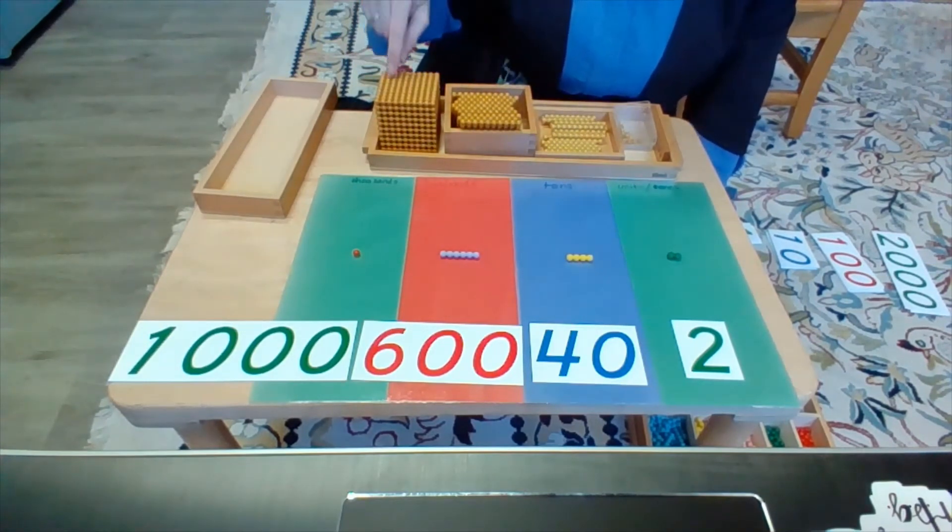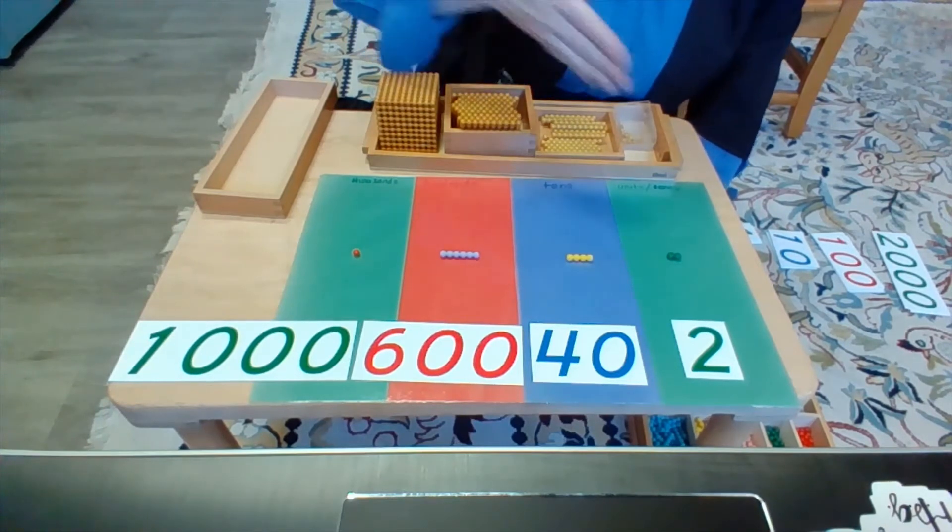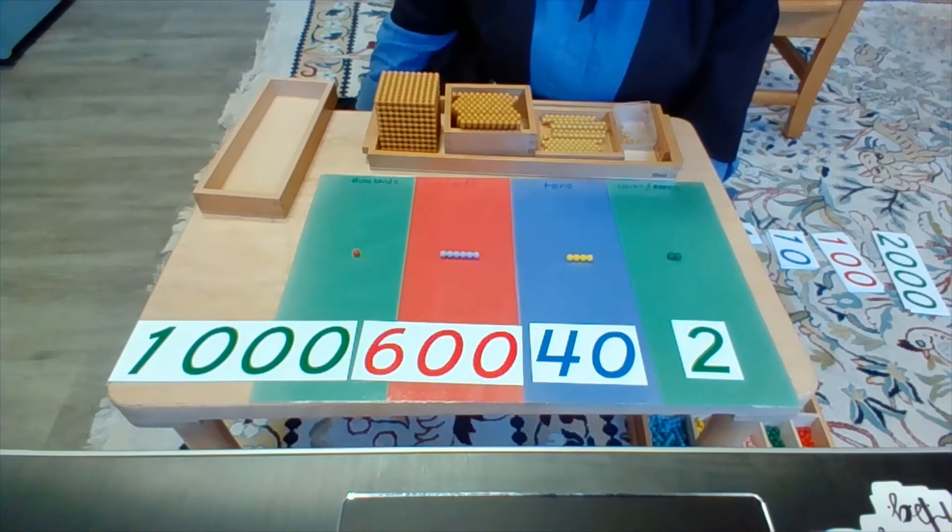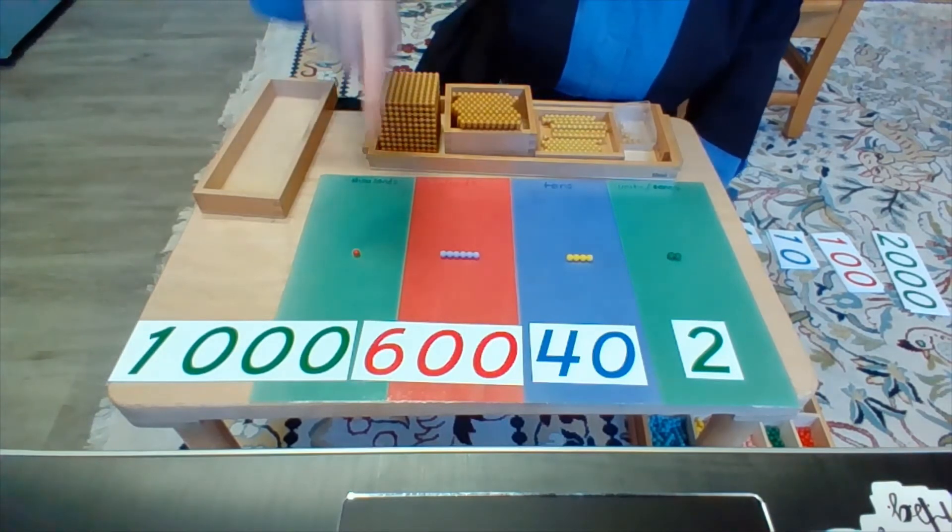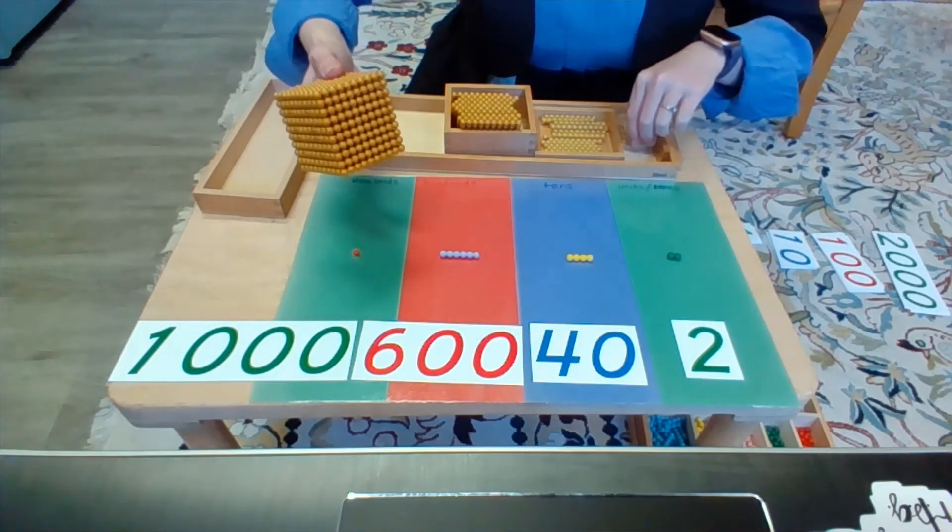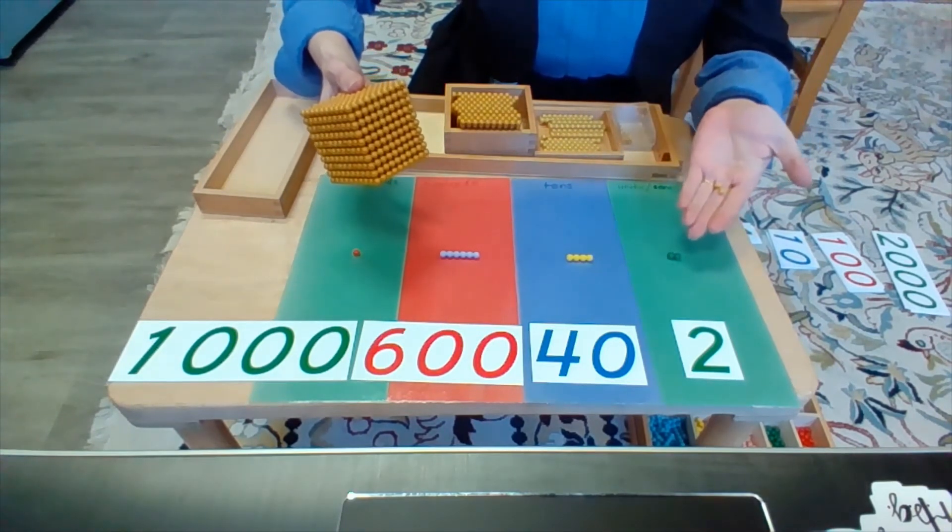Each one of these gets 10 times bigger, and so where this number is in the placement makes a very, very big difference. Because 1,000 is still way more than a simple little 2.